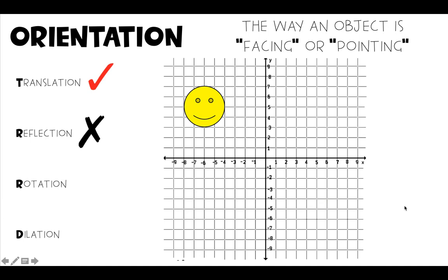Let's look at the rotation. If we rotate our shape 180 degrees, is our orientation the same? Is our smiley face as we started right side up? Is it still right side up? No, it's now upside down. We have an upside down smiley face. So the way our object is facing or pointing did not stay the same. So the orientation was not preserved.